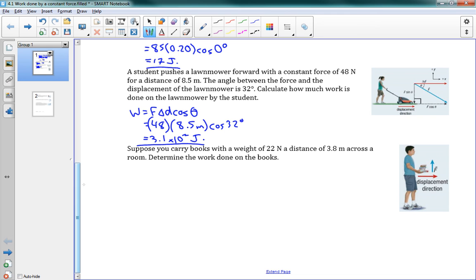And this very last problem is about a student carrying books with a weight of 22 newtons, a distance of 3.8 meters across a room. Now, notice you have to apply this vertical force of 22 newtons to hold the books up, to keep them from falling. Now, the problem is that that is at an angle perpendicular to the direction of movement. So it doesn't matter how much force you're applying upwards, our angle here theta is equal to 90 degrees.